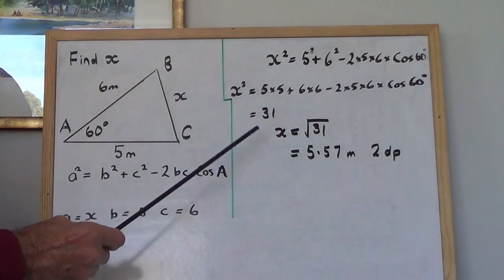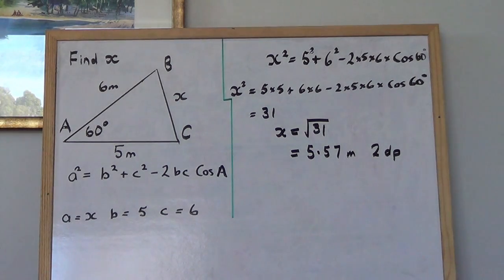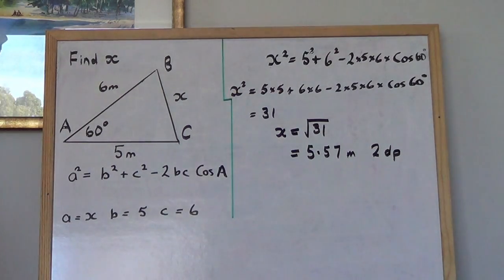Now remember x squared is 31, which means x has to be the square root of 31. You find the square root of 31 and it's 5.57 meters to 2 decimal places. And we've done that question there.